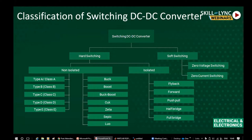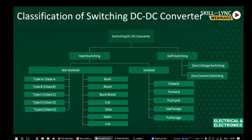Under hard switching converter we have two types: non-isolated converter and isolated converter. In non-isolated converters, the load is directly connected to the input with an electrical or physical connection between input and output. In isolated converters, the load is not directly connected to the input — there is electrical isolation between input and output, and the output is obtained through magnetic coupling. Under non-isolated converters we have many types depending upon the quadrants of operation.